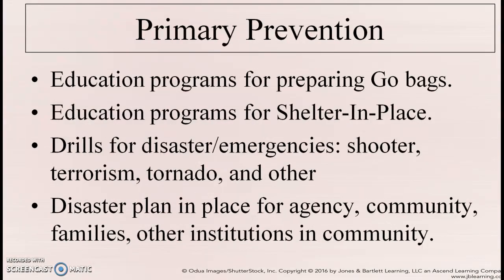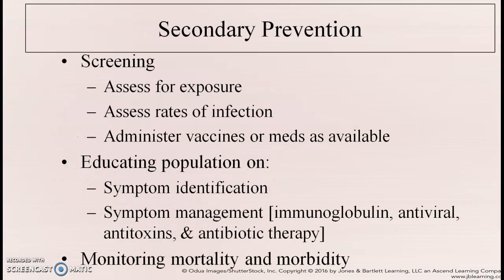Primary prevention for disaster means educating people about preparing go bags — so families are ready to move in an emergency — and providing education programs for shelter-in-place, such as staying home, closing windows, and turning off air conditioning. Public health nurses should work with disaster drills and have a disaster plan in place. Secondary prevention includes screening after an exposure, assessing rates of infection, and educating the population about symptoms that may develop as sanitation decreases.